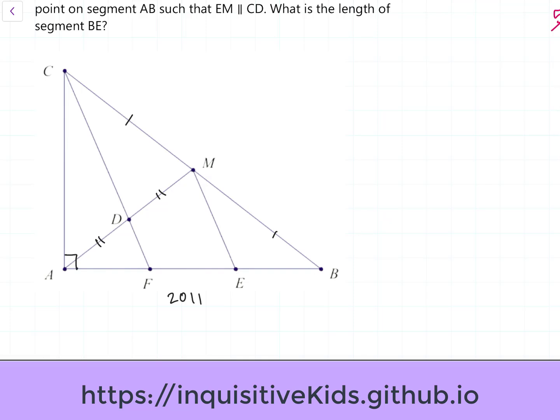Diving into the problem, let's try to find pairs of similar triangles. And as you observe, you'll quickly find one pair. And that is triangle ADF and triangle AME. As you can see, EM is parallel to CD. Therefore, they have the same two base angles. They also share this one angle and this top angle as well. So, because of this, we know that triangle ADF is similar to triangle AME.